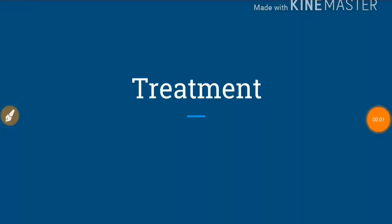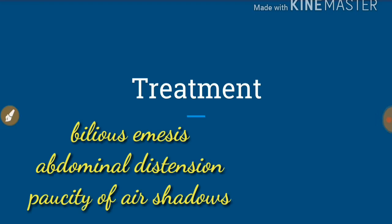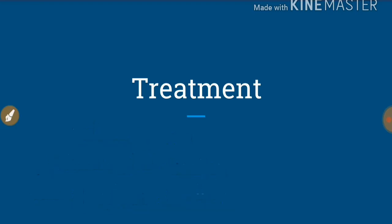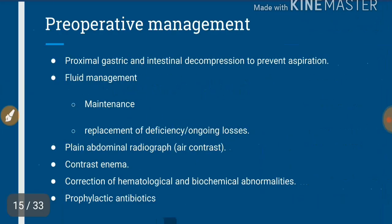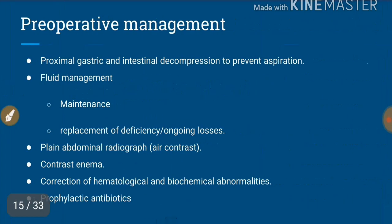Now coming to the treatment of ileal atresia. Suppose we are getting a child with bilious emesis, abdominal distension, air-fluid levels in the bowel, and positive air shadows distally — how will we approach this child?